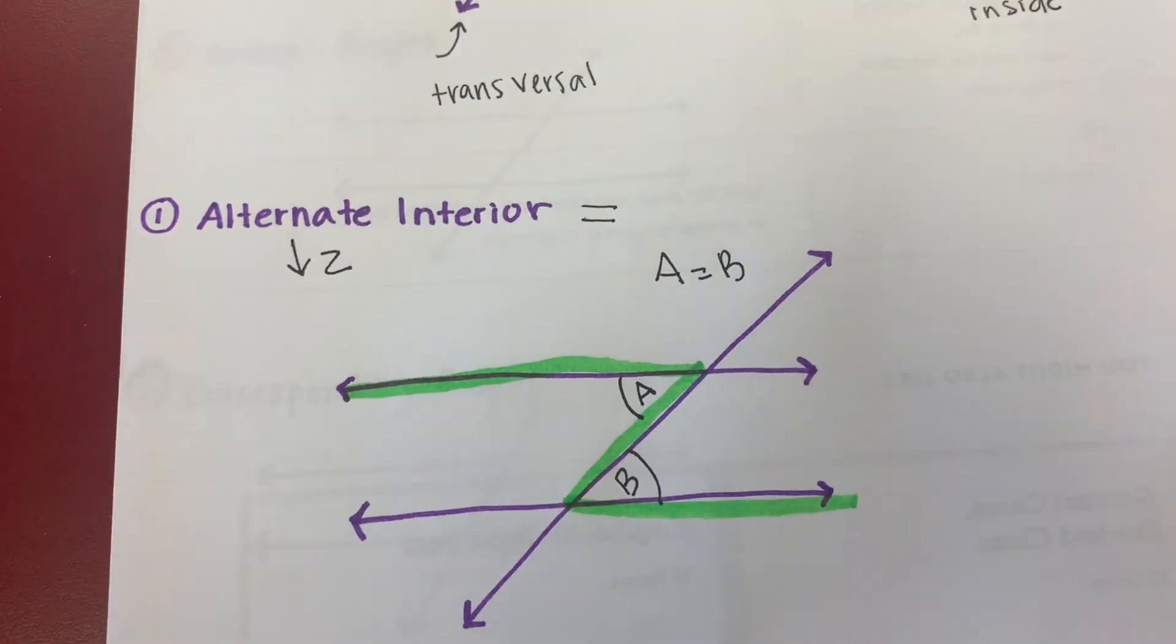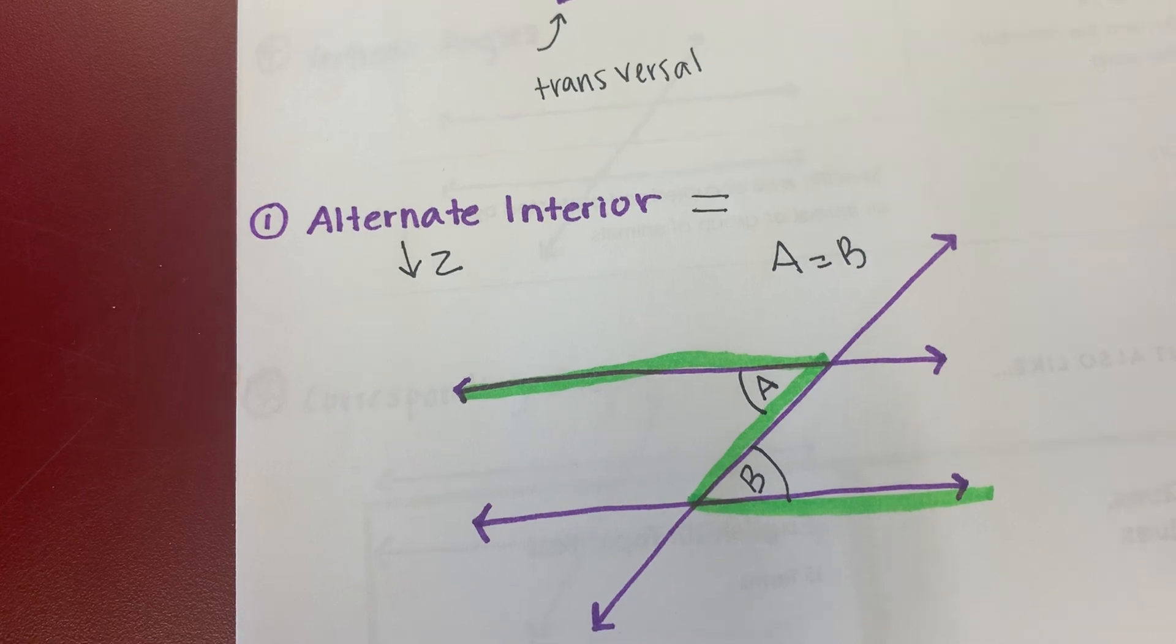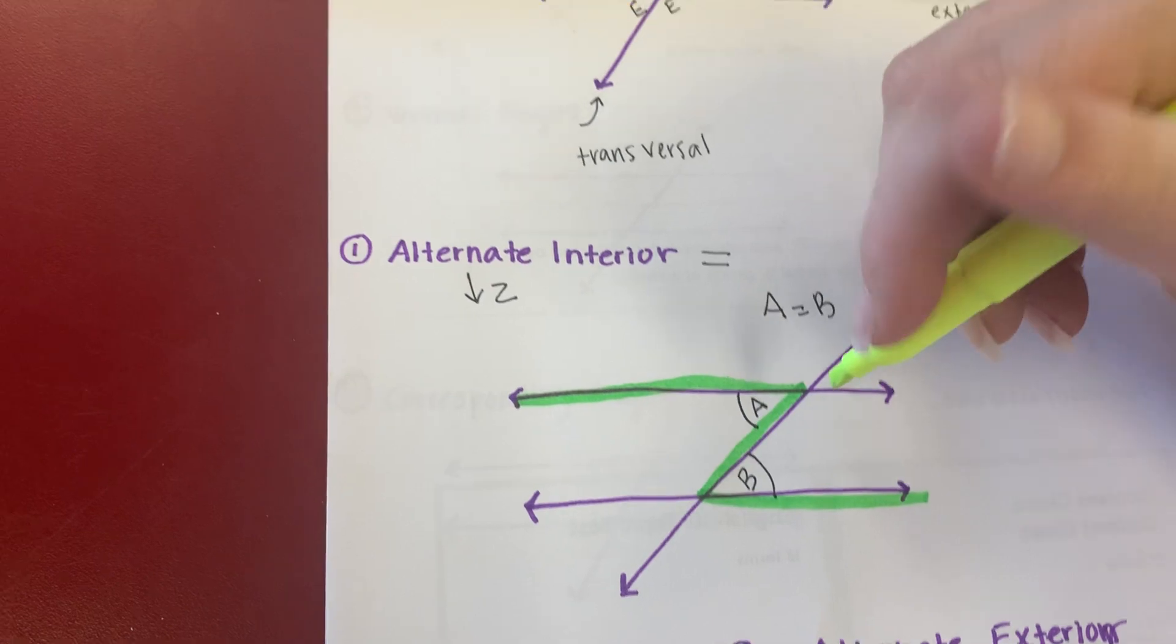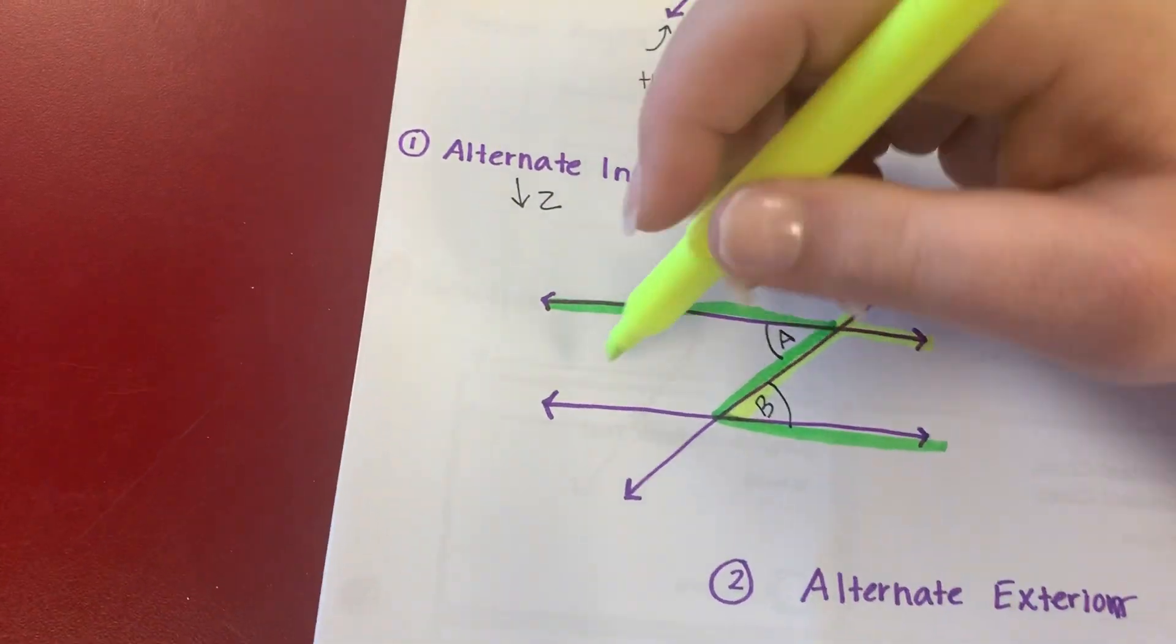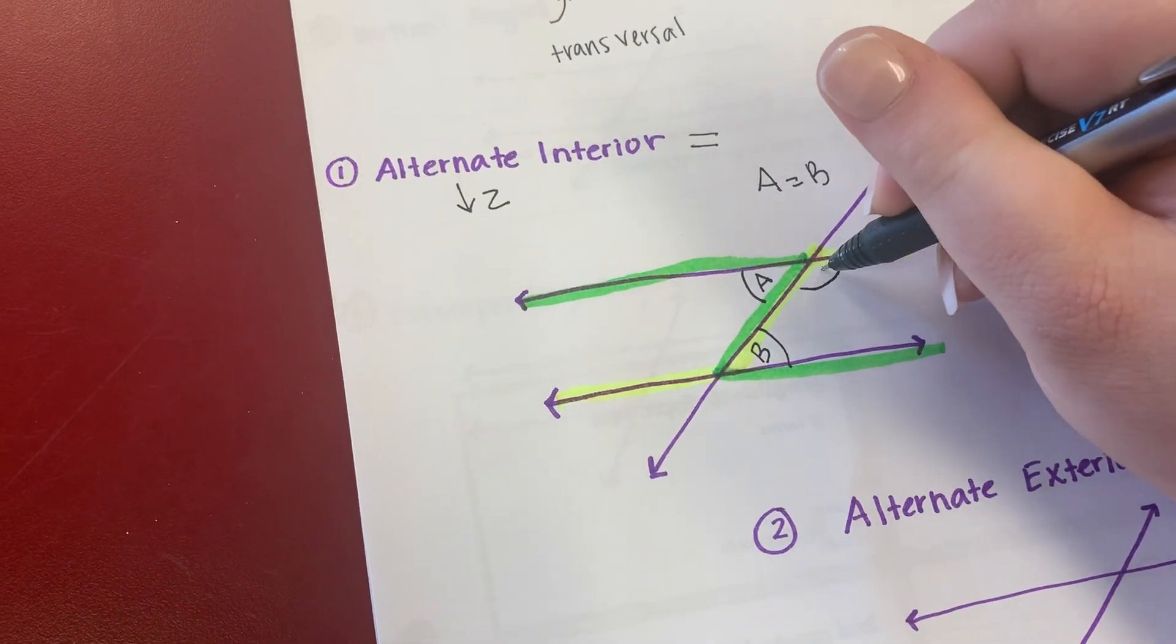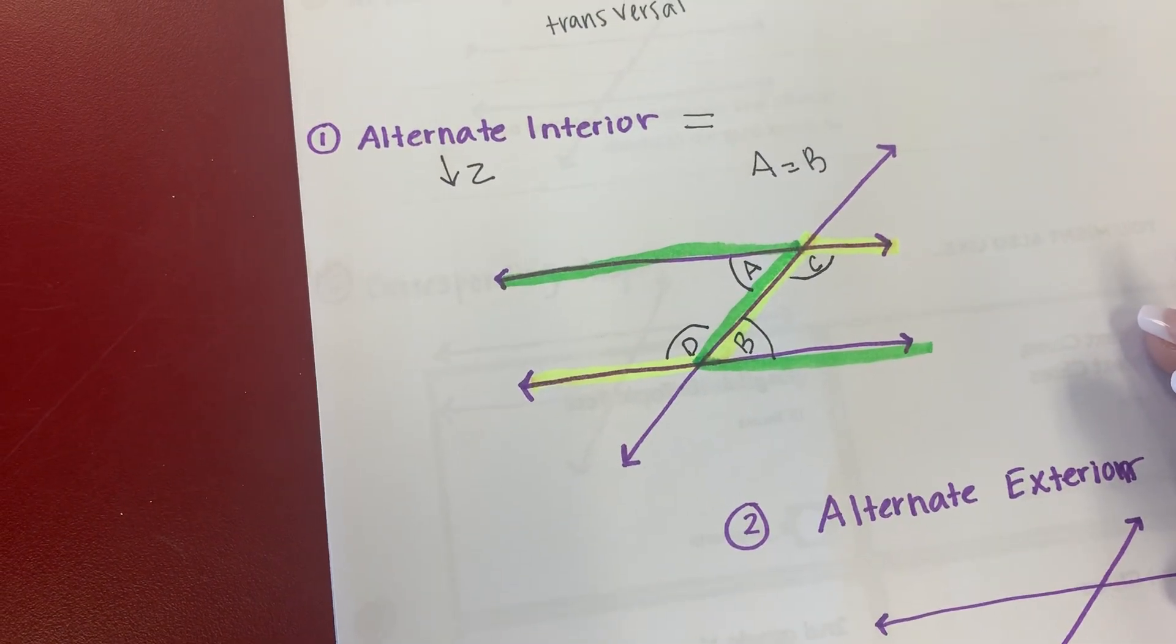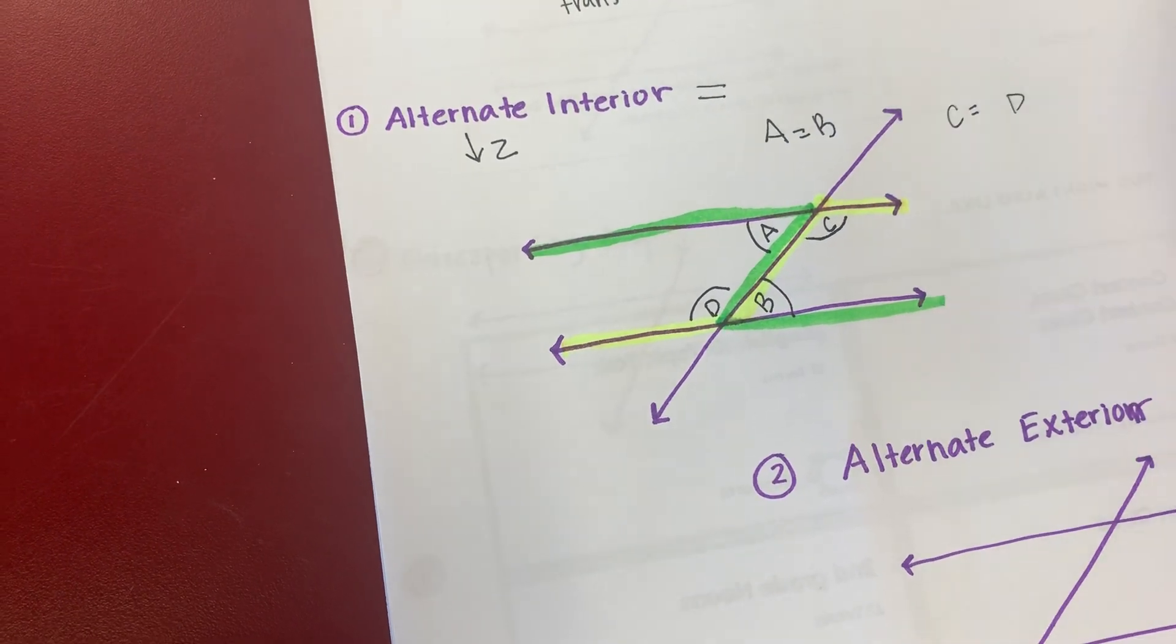But those are not the only alternates. Those are not the only interior angles that are there. I can also draw a backwards Z. And when I do that, I now have inside angle C, angle D. And what do I know about alternate interior? They equal. So I also now know that angle C is angle D.